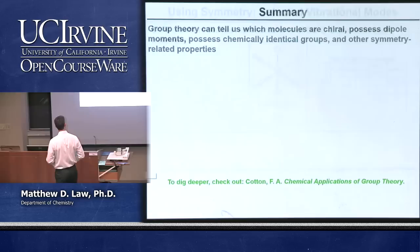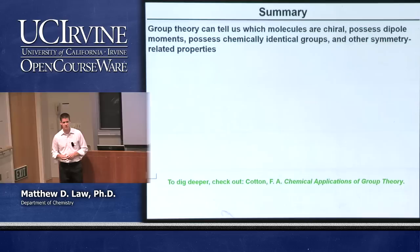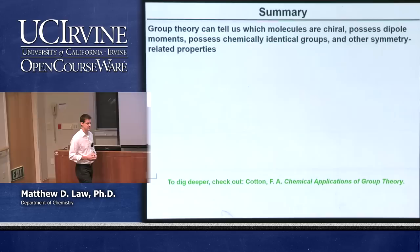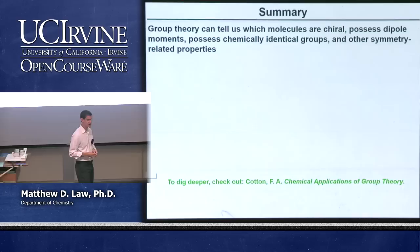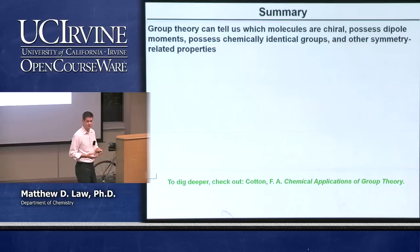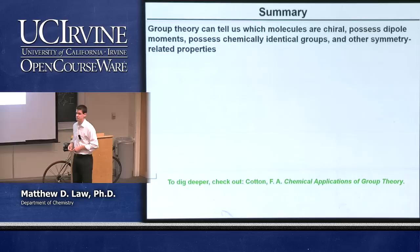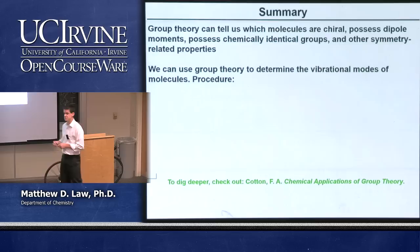Let's summarize what we've talked about in Chapter 4. Group theory tells us a lot — symmetry considerations alone can tell us a tremendous amount about different molecules. It can tell us what molecules are chiral (it must belong to a pure rotational point group), molecules that possess dipole moments, that have chemically identical groups, and symmetry-related properties like vibrations. We can use group theory to determine the vibrational modes of molecules using the following procedure.